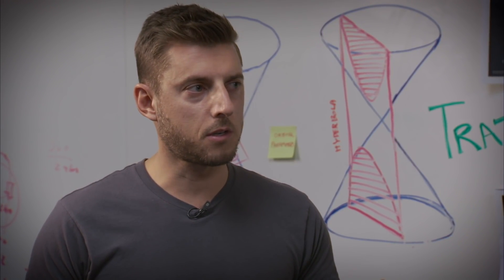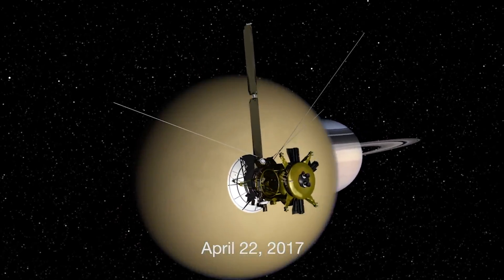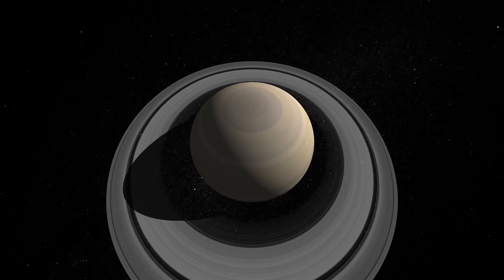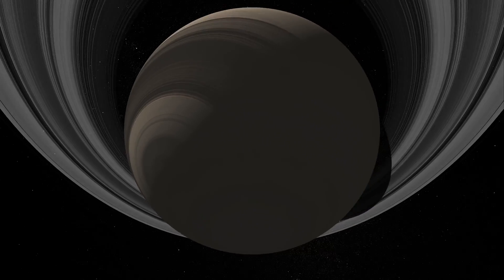What we've done is we've designed this trajectory such that utilizing one last Titan gravity assist, we can jump the entire ring system and place the spacecraft orbit inside this very, very small gap that's only 2,000 kilometers wide.